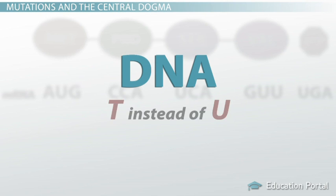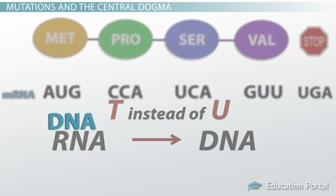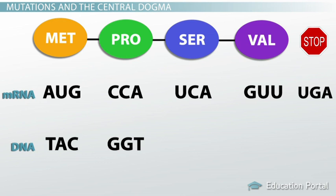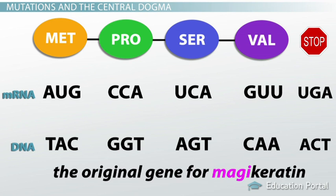Make sure you put in the letter T instead of U since we're going from RNA to DNA. So the original DNA code would have been TAC, GGT, AGT, CAA, ACT. This is the original gene for magic keratin.